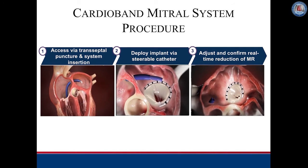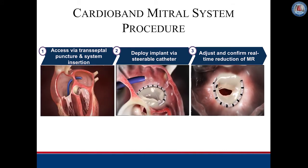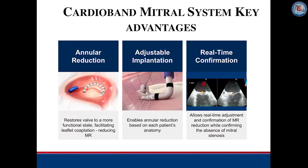After the Cardioband is fully anchored, tension is applied under 3D echo to constrain the annulus and optimize MR reduction. Similar to a surgical band, the Cardioband restores the valve to a more functional state, facilitating leaflet coaptation and reducing mitral regurgitation. A CT scan is used for pre-procedural planning and an appropriate size band is selected according to each unique patient's anatomy. Unlike surgery, cinching the band with real-time transesophageal echo confirmation allows for optimization of mitral regurgitation while confirming the absence of mitral stenosis.